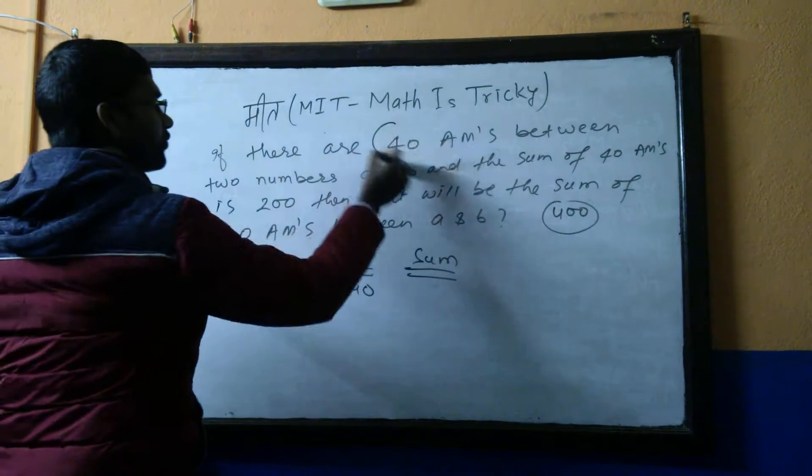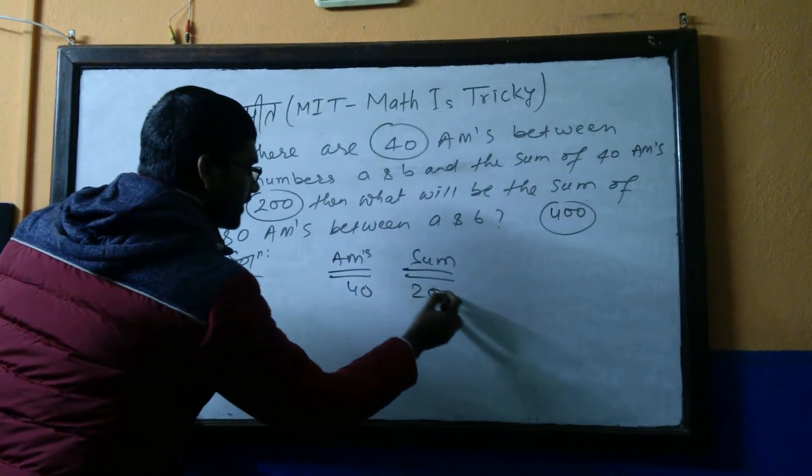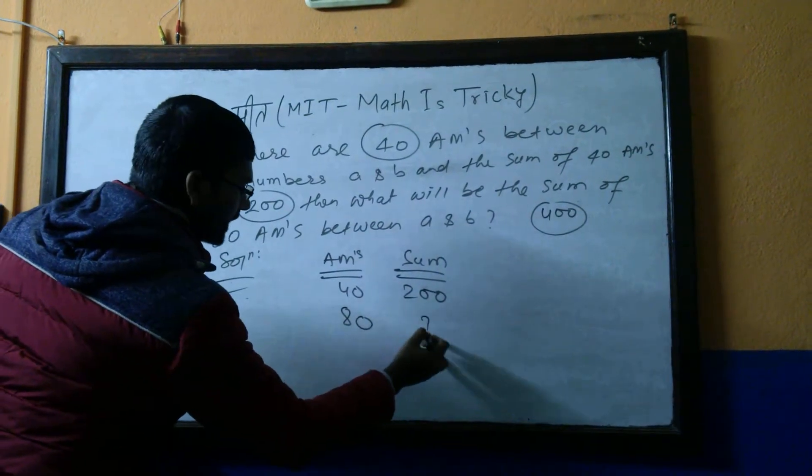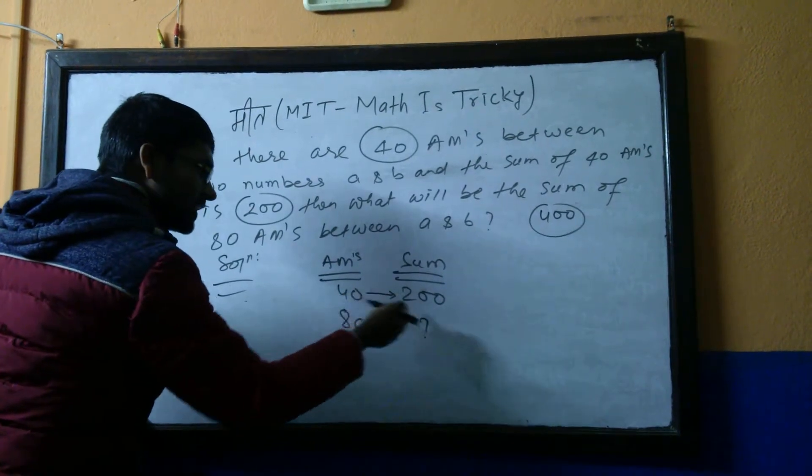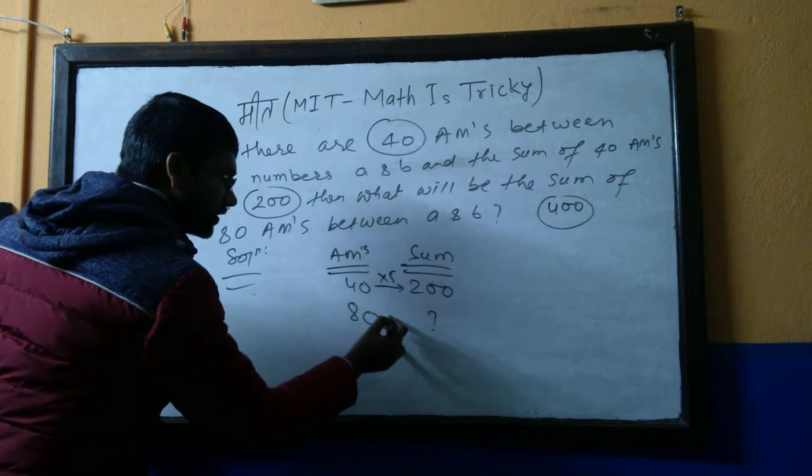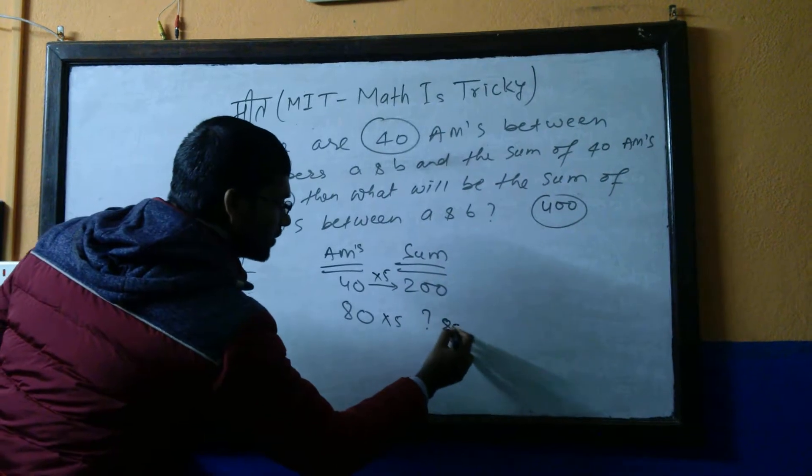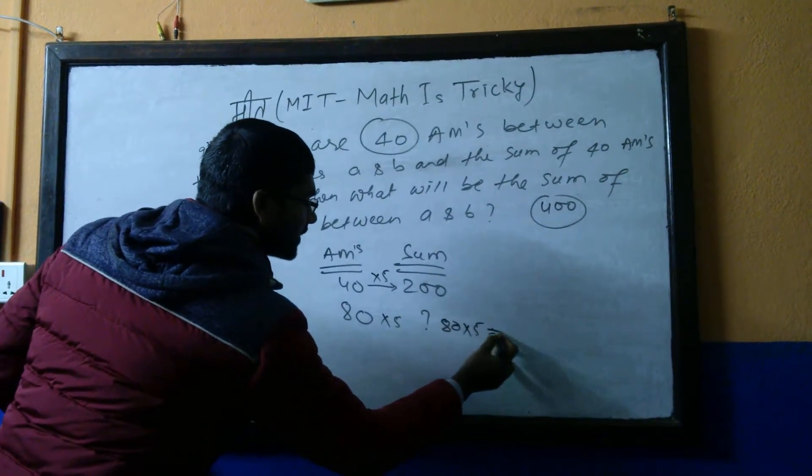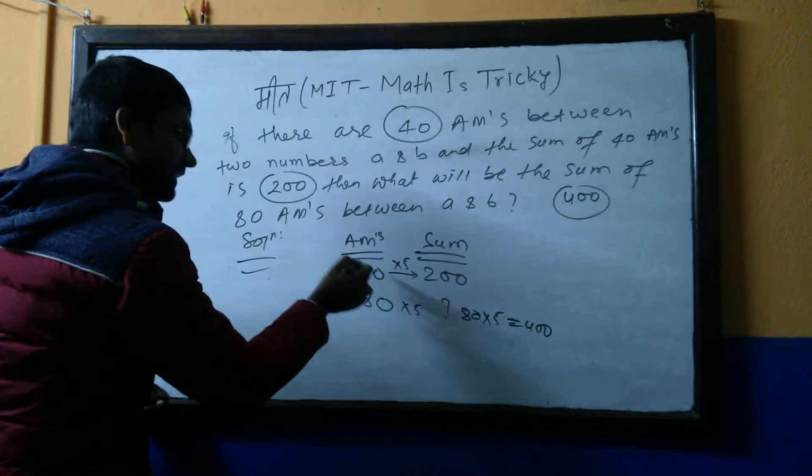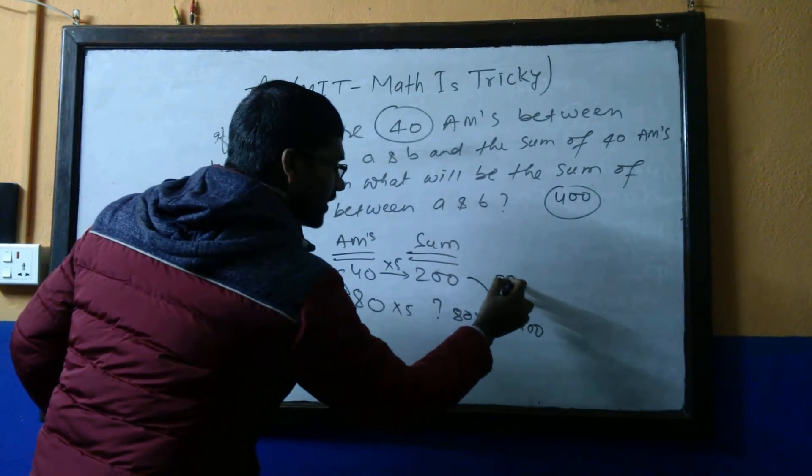See here, according to the trick, how we are going to solve this. Simply see here: AMs are there 40, sum is 200. Now check here, this is 40 into 5. So let's do here also times 5, we will get the answer. Check here, it is simply 80 into 5, you got 400.